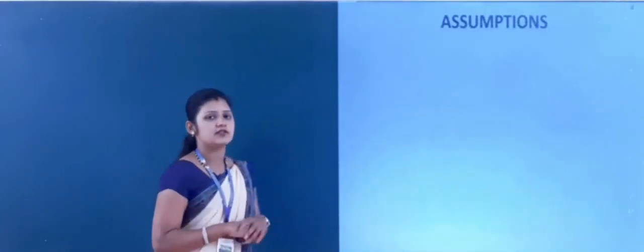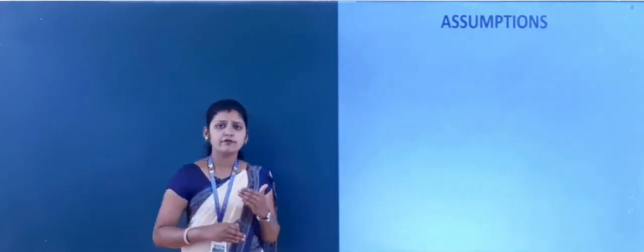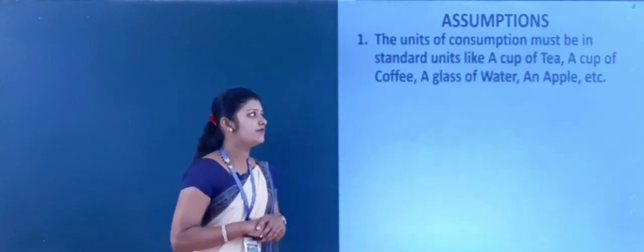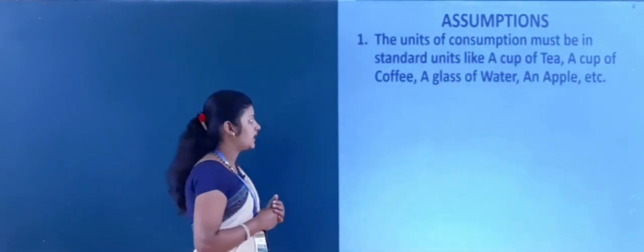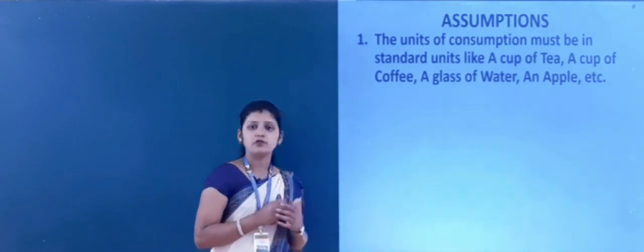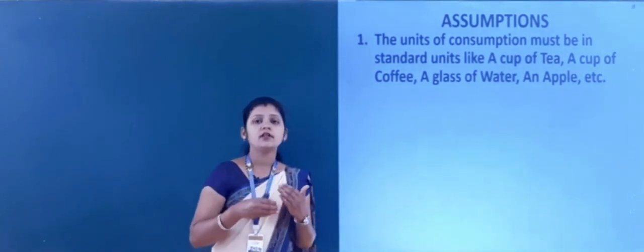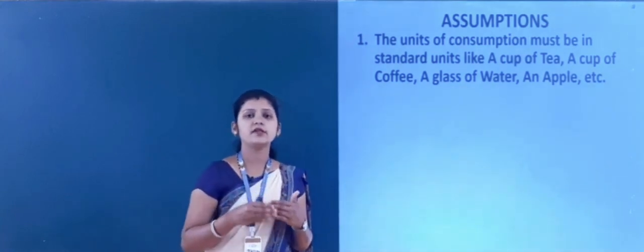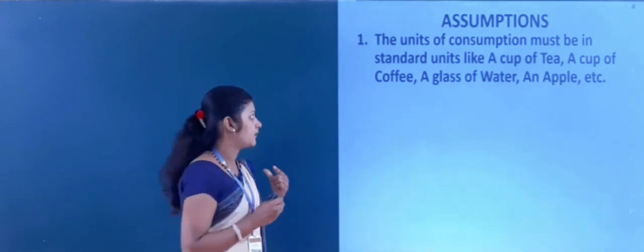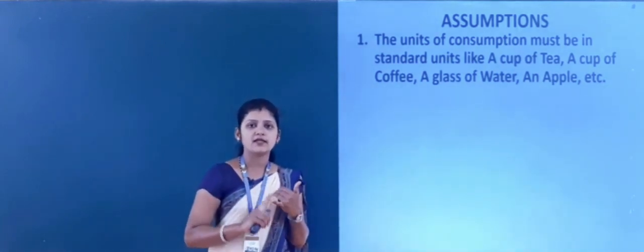Now the next is assumptions. There are some assumptions, and if these assumptions are fulfilled, then only the law of diminishing marginal utility is applicable. The first assumption: the units of consumption must be in standard units like a cup of tea, a cup of coffee, a glass of water, or an apple, etc. Then only the law of diminishing marginal utility is applicable.